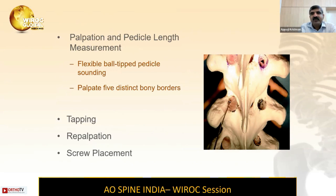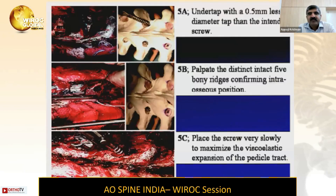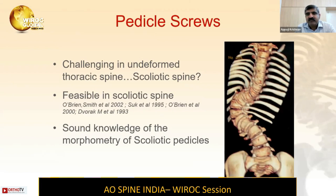Once you are sure of the five endpoints, you can tap the initial part of the screw channel. I usually use a smaller 4.5mm tap even when putting in a 5.5mm or 6.5mm screw. Once tapped, it is easier. You can repalpate using the flexible pedicle probe and then insert the screw. This freehand technique helps prevent inadvertent penetration of the medial wall, which is more dangerous because you are working near the spinal cord. After seeing the pedicle blush, probe, tap with 4.5mm, and insert a 5.5mm or 6.5mm screw.